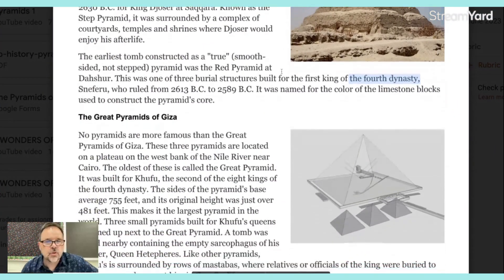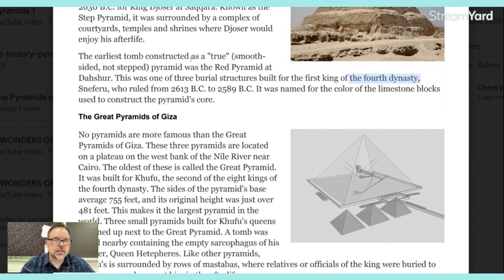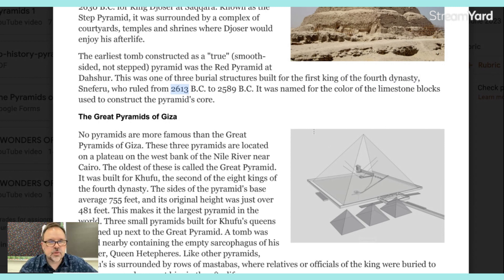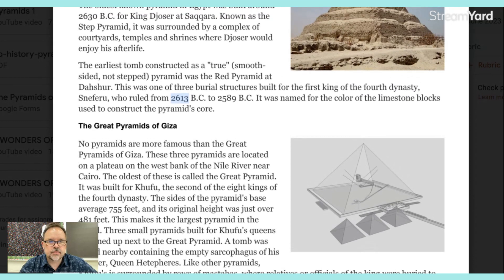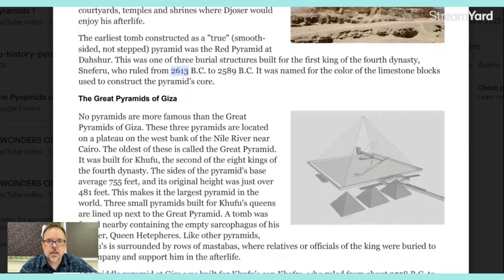Sneferu ruled from 2613 B.C. to 2589 B.C. Notice this is a bigger number because it's like a negative number going backwards. The Red Pyramid was named for the color of the limestone blocks used to construct the pyramid's core.